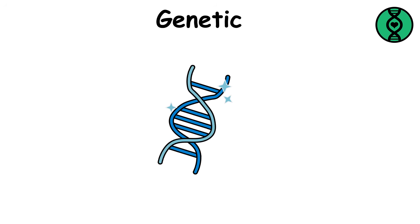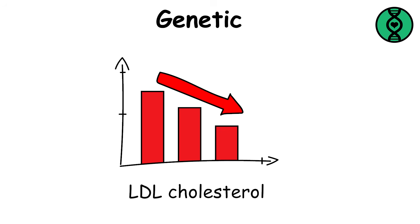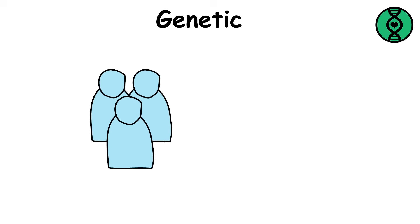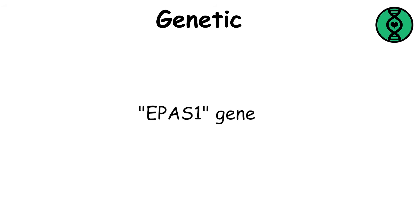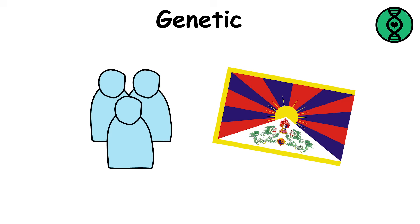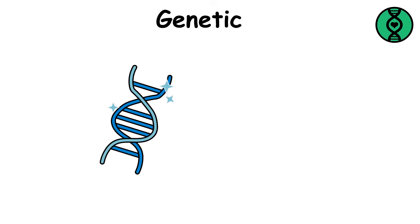For example, some carry mutations like those in the LRP5 gene that make their bones nearly unbreakable. While others have DNA variations, such as mutations in a gene called PCSK9, which lower LDL cholesterol levels independently of lifestyle. There are even rare individuals, such as members of Tibetan populations with EPAS1 gene variants, whose bodies process oxygen more efficiently, giving them near-athletic performance without training.